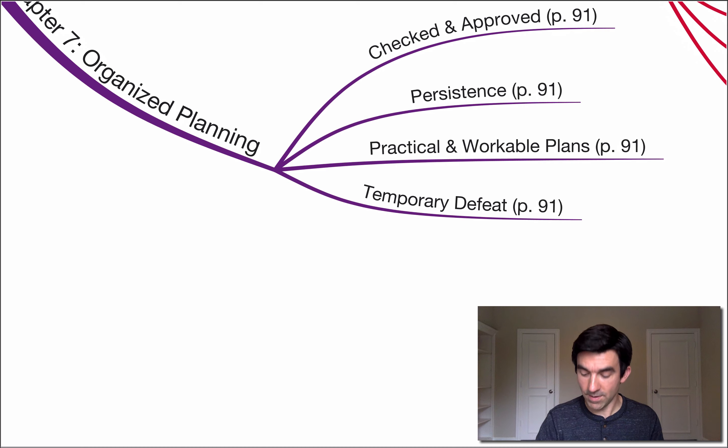Fourth key point here, temporary defeat. Thomas Edison failed 10,000 times before he perfected the incandescent electric light bulb. That is, he met with temporary defeat 10,000 times before his efforts were crowned with success. Temporary defeat should mean only one thing, the certain knowledge that there is something wrong with your plan. So isn't that an interesting reframe? If you meet with defeat,